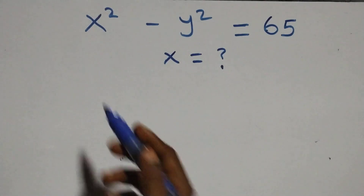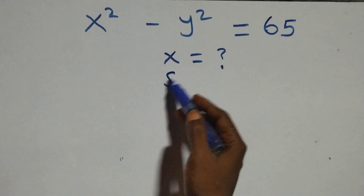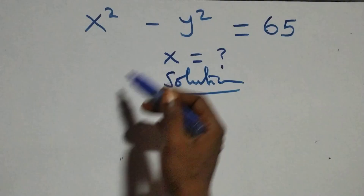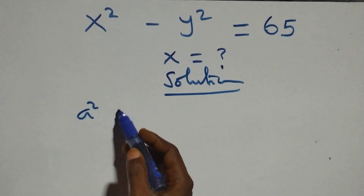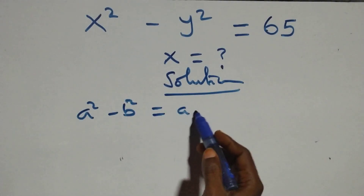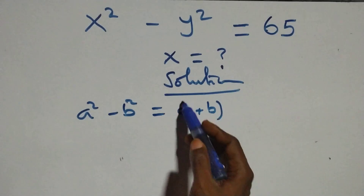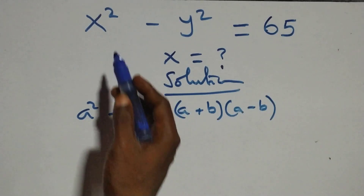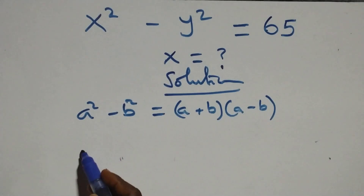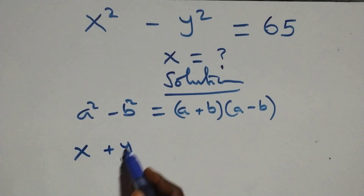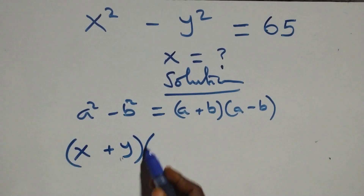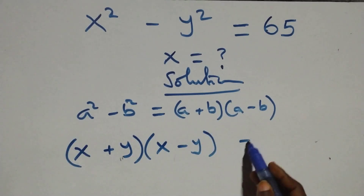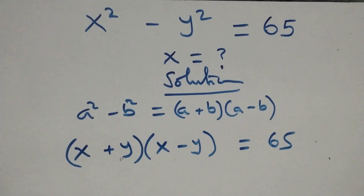Hello, you're welcome. How to solve this nice algebraic equation. What we have here follows from the identity a squared minus b squared equals (a plus b)(a minus b). Using this, we can rewrite the equation as (x plus y)(x minus y) equals 65.